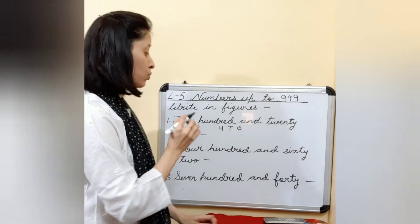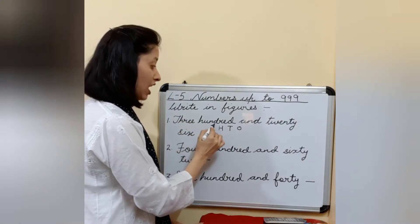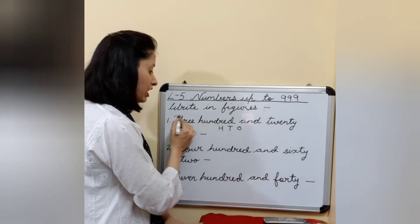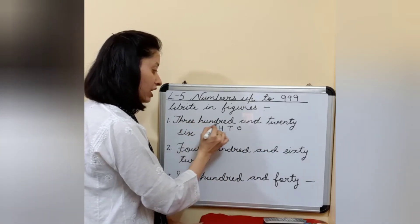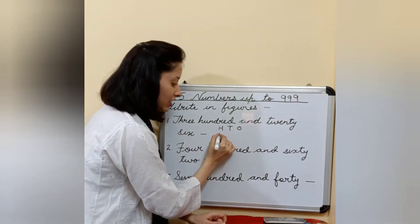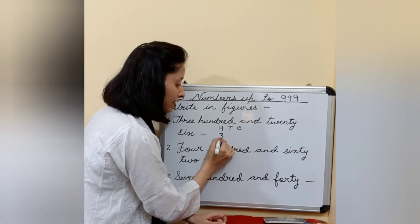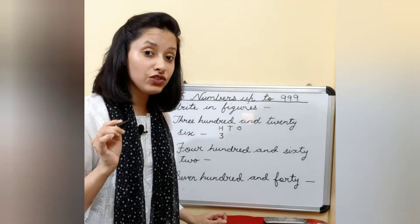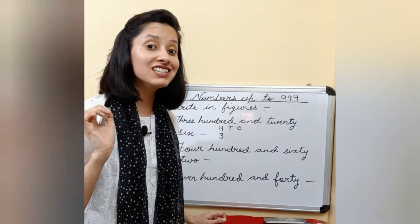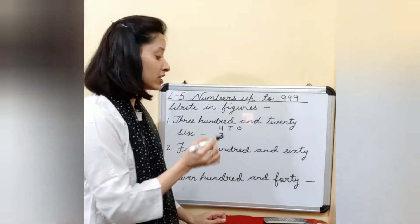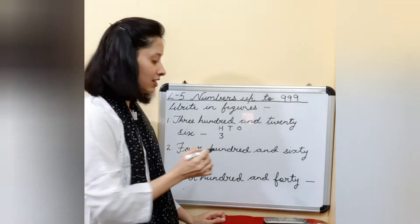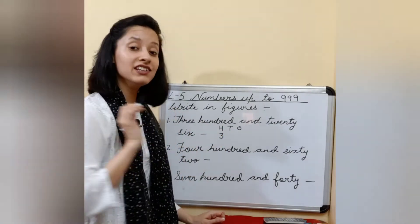Now let's read it once more: three hundred and twenty-six. So for 300, you will write three. Where will you write three? Three at hundreds place, because it is 300. That's why you only have to write three at hundreds place — it means under H, you will write three.